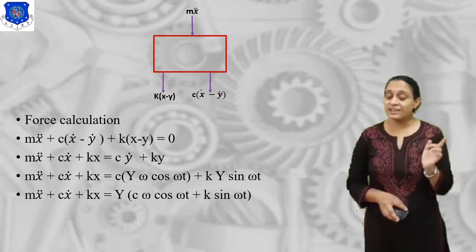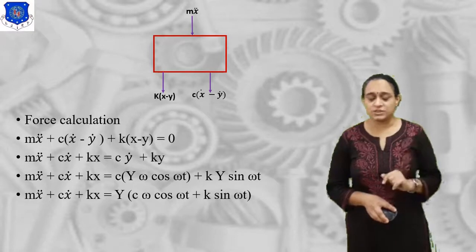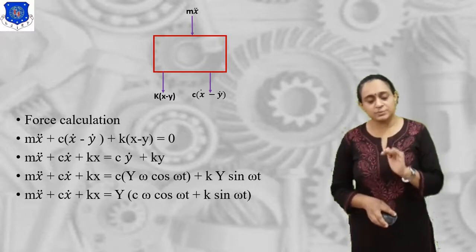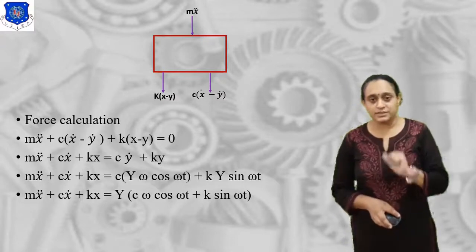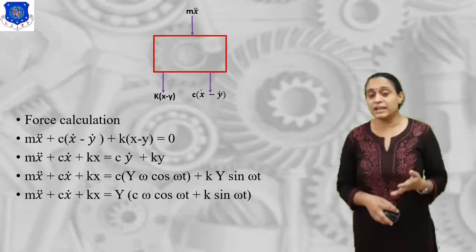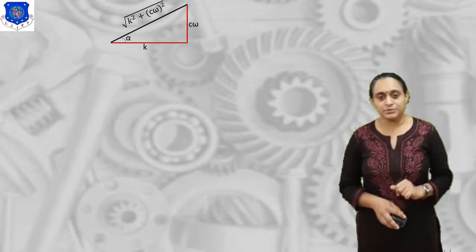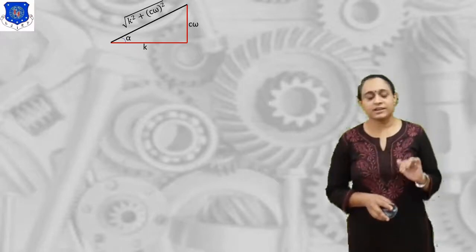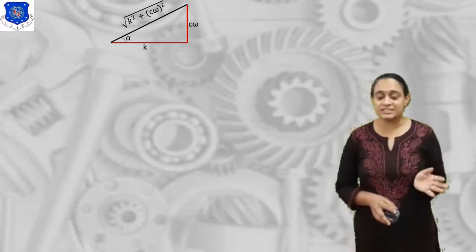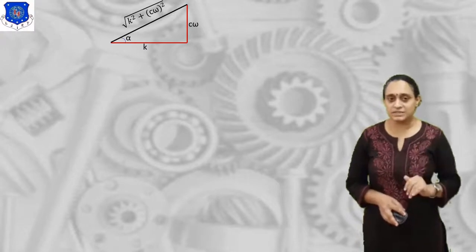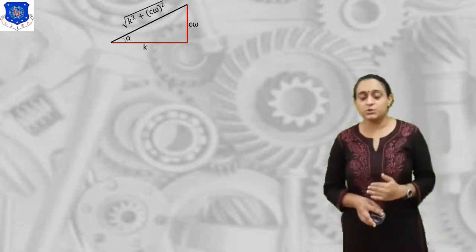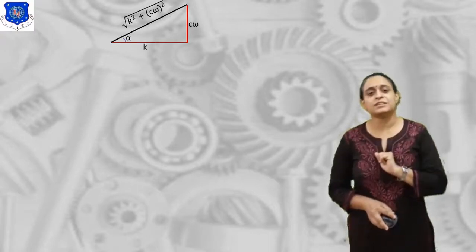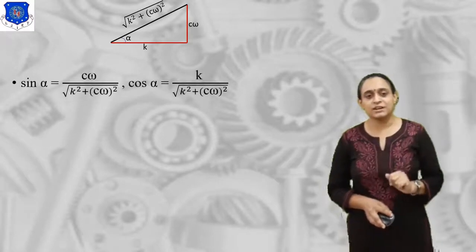As we studied in a previous lecture, cω is the damping force component and k is the spring stiffness. We can use cω and k to draw a right triangle where they are perpendicular to each other, with angle alpha between them — the lag angle as used in the force transmissibility lecture. The hypotenuse value is √(k² + c²ω²). From this triangle we can find sin α and cos α.